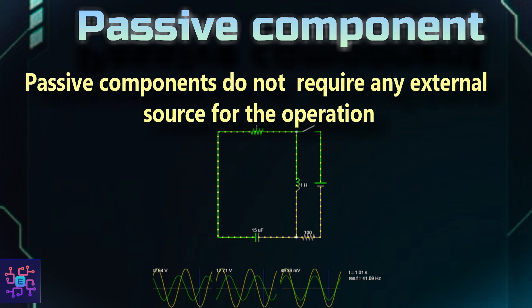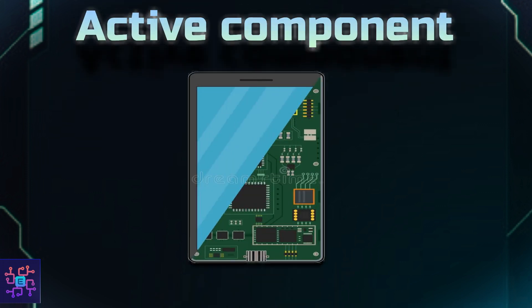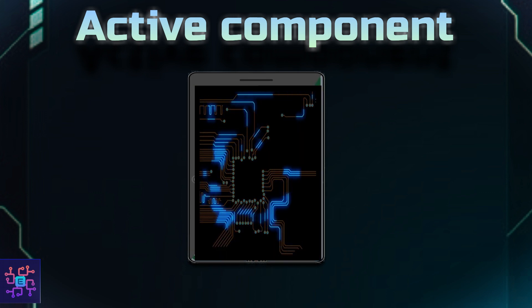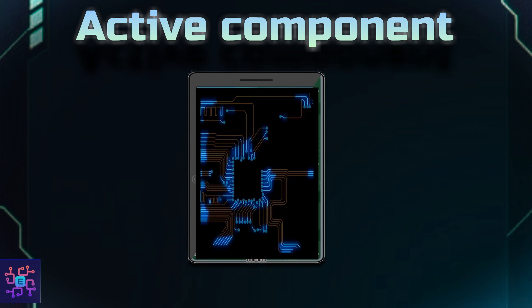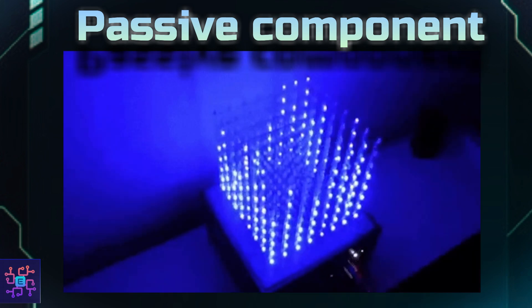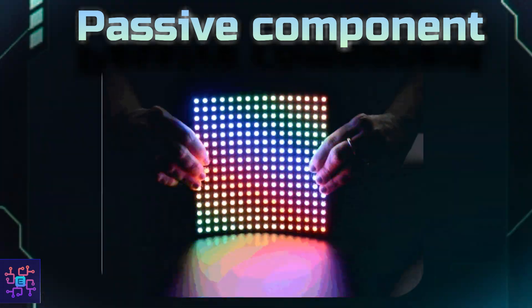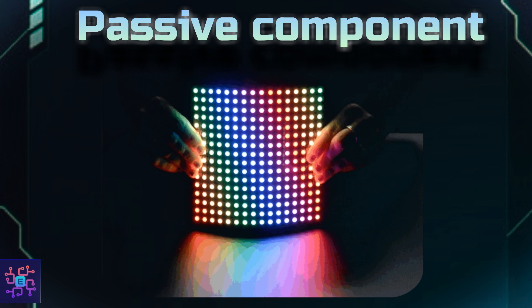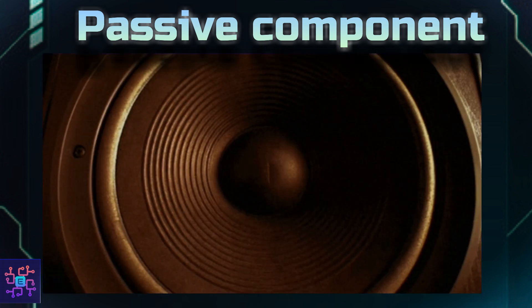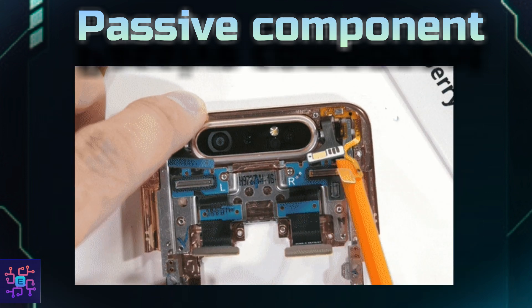For example, in your smartphone, an IC is an active component because it drives the logic. When talking about passive components, we can mention the LED used for the display, the speakers, and sometimes even the camera — these output devices are the passive components.